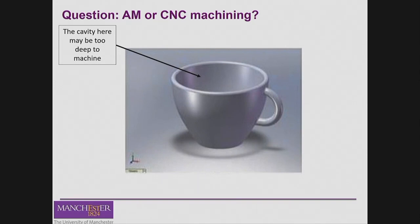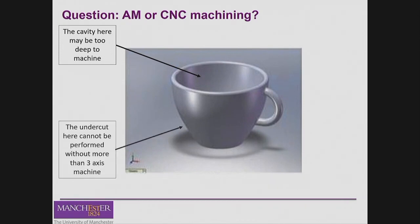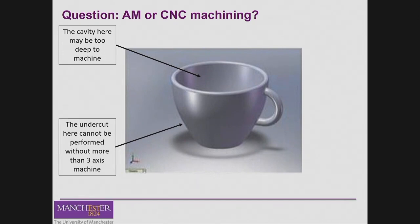This could be a potential problem because you're using a cutting tool with a specific length. If the depth of the cavity you are machining or drilling is greater than the length of your tool, you can crush it. That's a potential limitation. Also, these undercuts or overhangs mean that if you want to machine here you will need more than three axes.